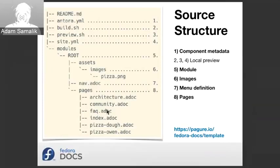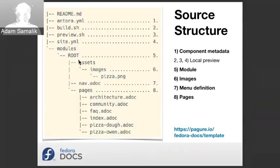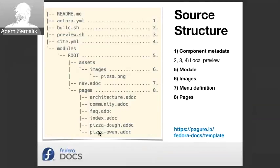This is the structure of the files and the template. There are many different files — one is the component metadata, which defines the name of the component and the versions that are accessible. Then we have those modules. If you only have one, which is basically most components, we have only a single module. This is called root, and it contains all the things you need: some images, the menu definition, and a list of all the pages.